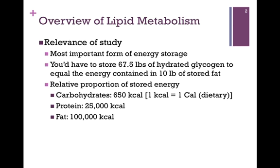In other words, when you look at a nutritional label and it gives you the calorie content of food, those are actually kilocalories, scientifically speaking. So in this case, we store approximately 650 kilocalories of carbohydrates compared to 25,000 kilocalories worth of protein, but 100,000 kilocalories of fat. So clearly, our bodies consider fat its most important form of energy storage, and we'll see why as we move along in our lessons.